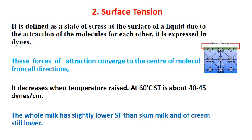The second property is surface tension, defined as a state of stress at the surface of a liquid due to the attraction of molecules for each other, expressed in dynes. These forces of attraction converge to the center of molecules from all directions. Surface tension decreases when temperature is raised. At 60 degrees Celsius, surface tension is about 40 to 45 dynes per centimeter. Whole milk has slightly lower surface tension than skim milk, and cream has still lower.